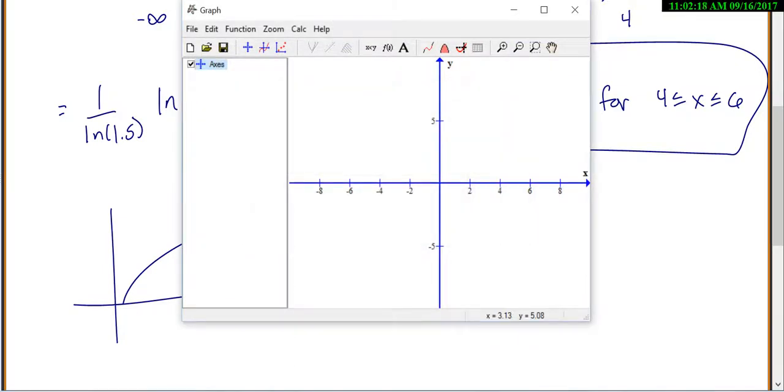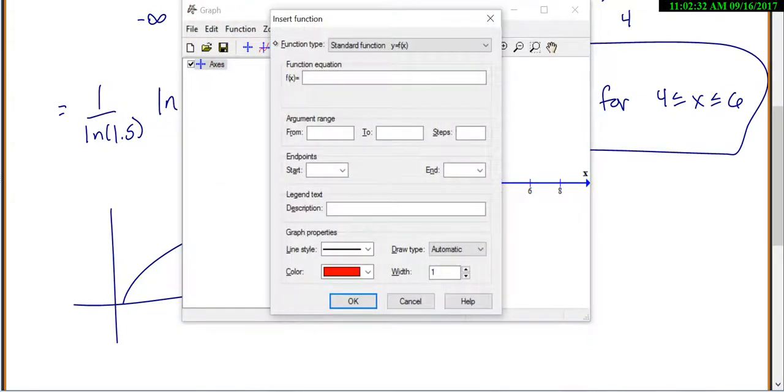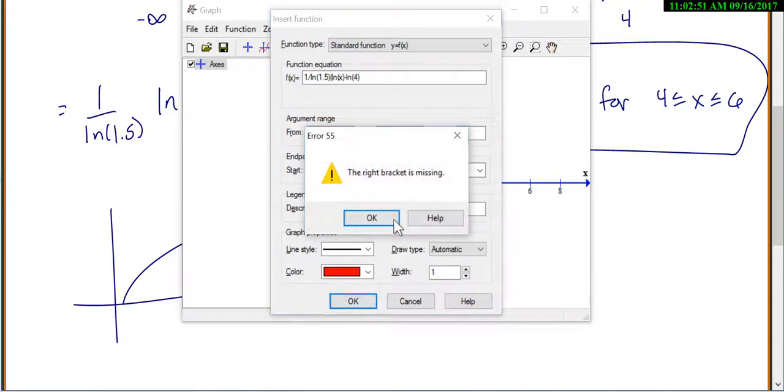Okay, and I just want to put in a new function. So we'll just go to function, insert function. And I have 1 divided by the natural log of 1.5 times the natural log of x minus the natural log of 4. And I only want to graph it from 4 to 6. Let's see what we get.